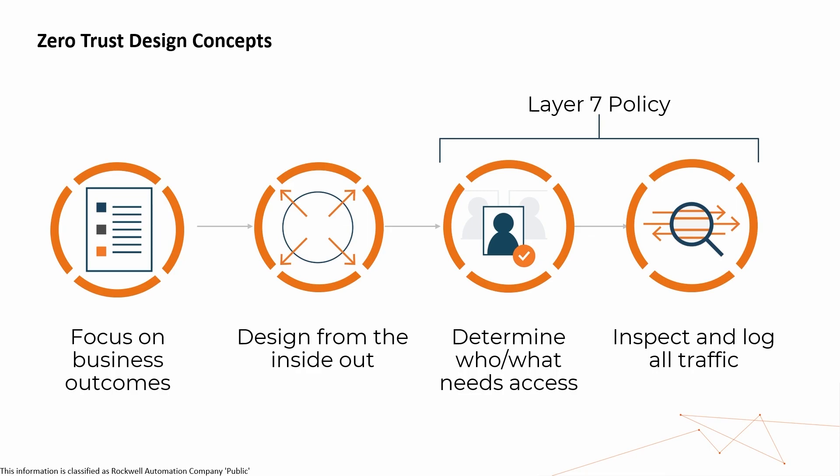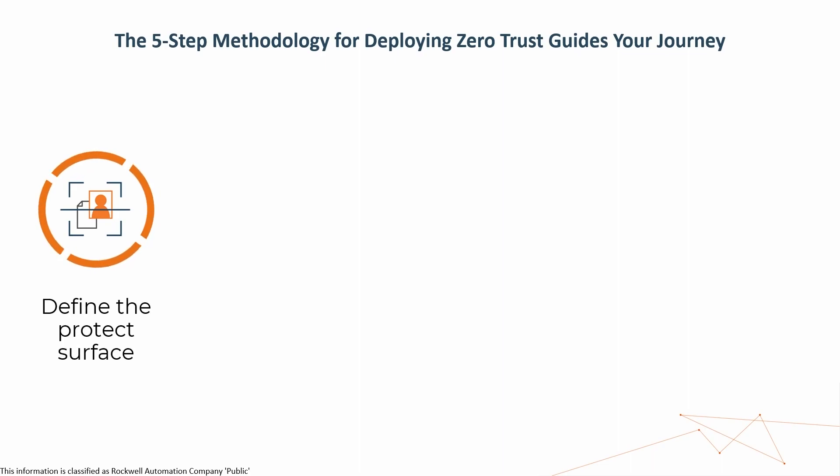And finally, you inspect and log all traffic, because that's where all the bad stuff happens — in the traffic. If we do that, we can create a layer seven policy. Ultimately, zero trust is a layer seven policy statement. There is also a five-step methodology that will guide your journey. The first thing you need to do is define your protect surface. You can take the attack surface and shrink it down orders of magnitude to something very small and easily known, called a protect surface.